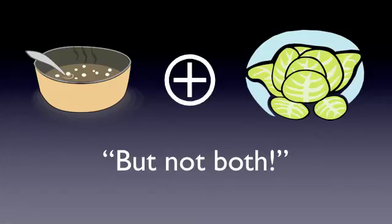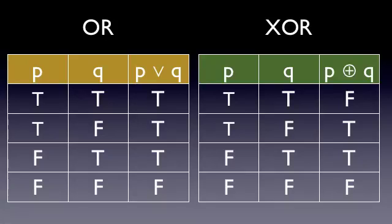So let's compare the truth tables for a disjunction with an exclusive OR. Notice that for an exclusive OR, if both P and Q are true, the statement is actually false.